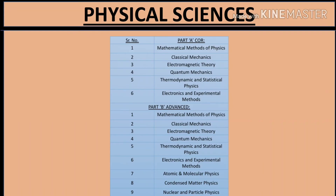For Physical Sciences, Part A is the core section and Part B is advanced. Core topics include: mathematical methods of physics, classical mechanics, electromagnetic theory, quantum mechanics, thermodynamics and statistical physics, and electronics and experimental methods. The advanced Part B topics include: mathematics of physics, classical mechanics, electromagnetic theory, quantum mechanics, statistical physics, electronic physics, atomic and molecular physics, condensed matter physics, and nuclear and particle physics.